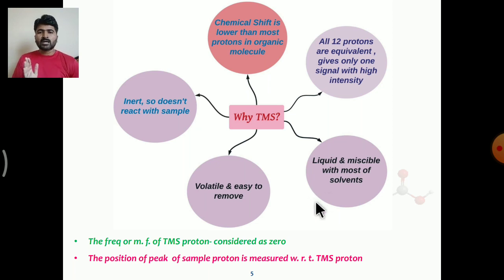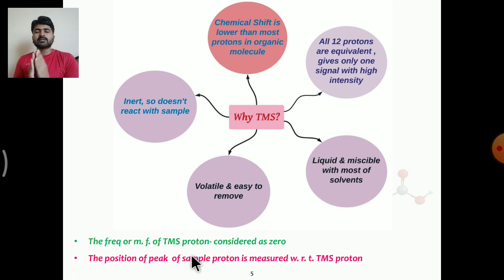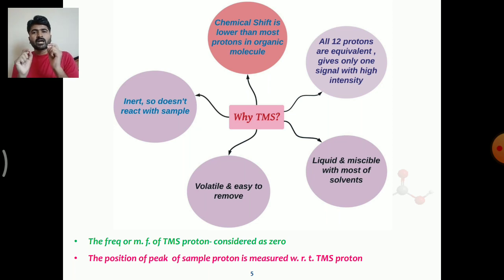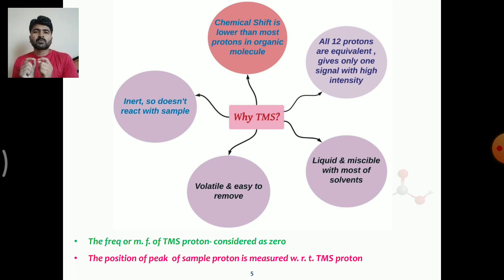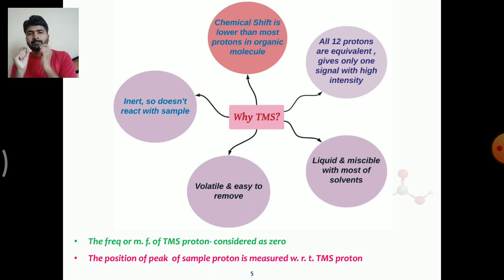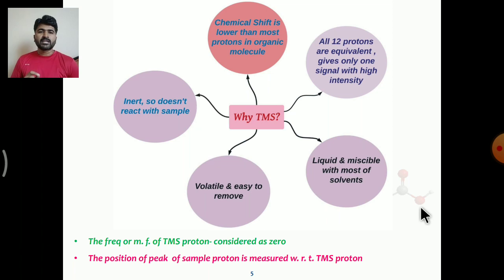The frequency and magnetic field of TMS protons is considered as zero. In reality a high field strength is needed to resonate TMS protons, but that is set to zero, and whatever frequency is required to resonate all 12 protons of TMS is also considered zero. The position of the sample proton peak is then measured with respect to the TMS proton.